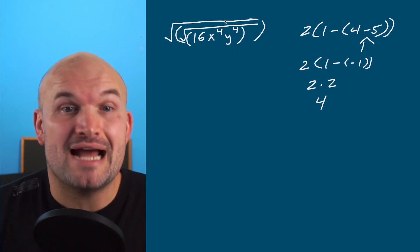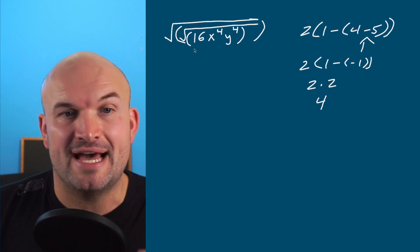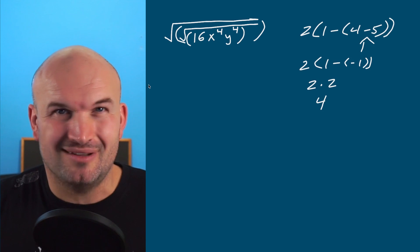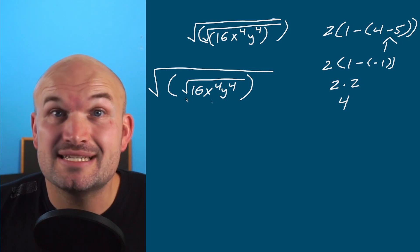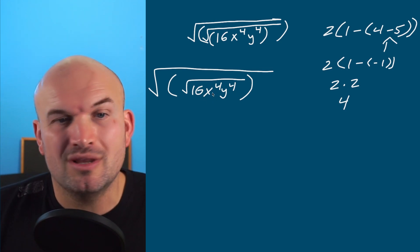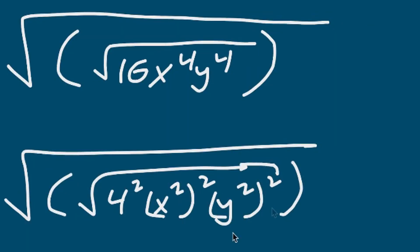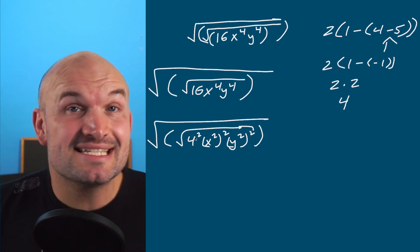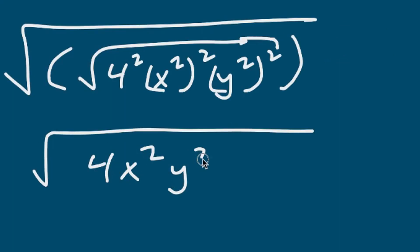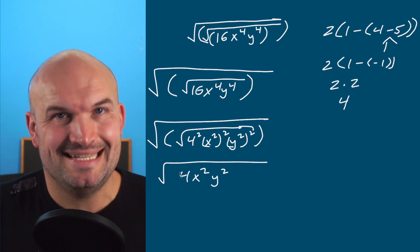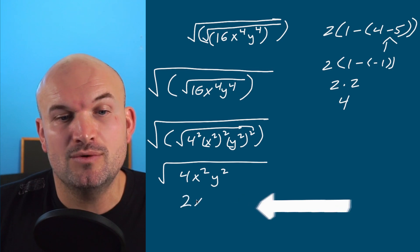By using some parentheses here, we can work from the innermost operation first. There's nothing I can do with 16x to the 4th, y to the 4th, so I'll just rewrite it with a bigger radical and then a smaller radical. I can simplify this to a 4 squared and then using the power rule as x squared squared and y squared squared. And now, we can go ahead and simplify this, which is going to leave me with a 2xy.